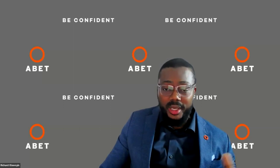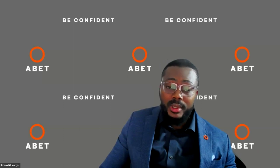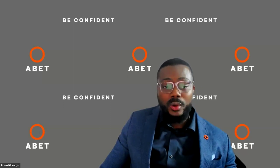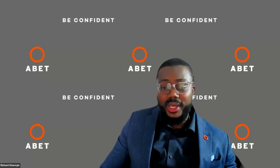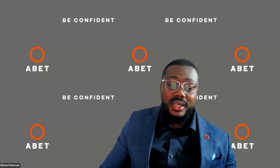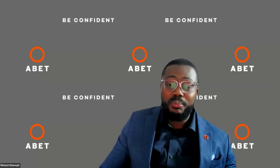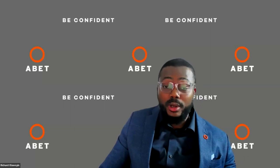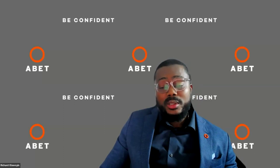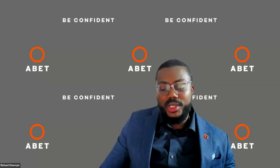ABET has other councils including the Academic Advisory Council, Accreditation Council, Industry Advisory Council, and the Global Council. Through motivations from the Computing Accreditation Commission and the introduction of accessibility, the name of our council was officially changed to the Inclusion, Diversity, Equity, and Accessibility Council at the ABET Spring Governance Meeting this past Saturday. The IDEA Council reports to the Board of Directors and has been charged to promote inclusivity, diversity, equity, and accessibility within ABET, its activities, its volunteer base, and its accredited programs.